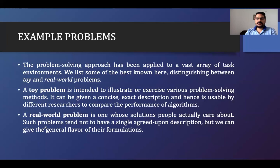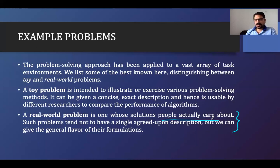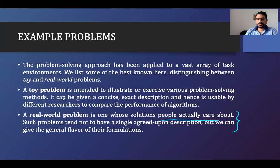In the real world problem, there is no single agreed-upon description, and there is no one solution or action that all will agree upon. The consequences are higher, the problem is in the real world, and the environment is not in our control — whatever action we perform, the environment will behave based on that particular action.